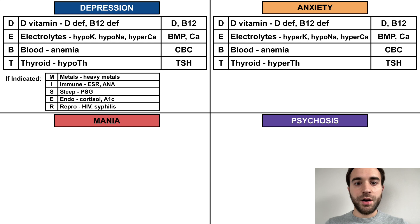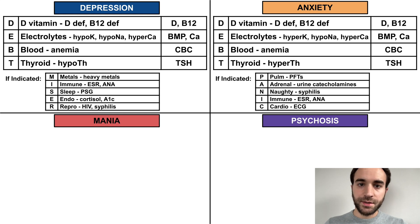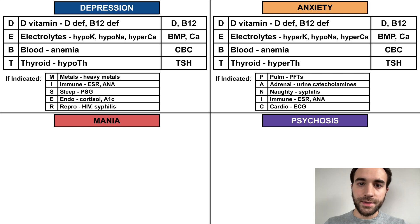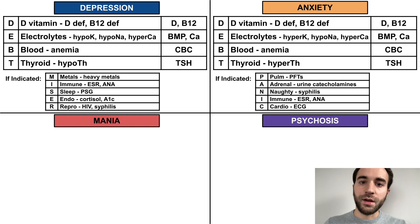As with depression, there are additional causes of anxiety that should be screened for if there is clinical suspicion, which can be remembered with the mnemonic PANIC. Pulmonary refers to asthma, COPD, and other chronic pulmonary problems, screened for with pulmonary function tests. Adrenal refers to conditions such as pheochromocytoma, screened for with urine catecholamines. Naughty refers to sexually transmitted infections including syphilis. Immune refers to autoimmune conditions such as lupus. And cardio refers to arrhythmias, which can be screened for with an EKG.